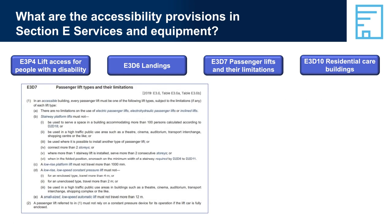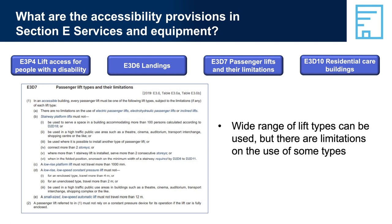E3D7, Passenger Lifts and Their Limitations: Part E3D7 identifies the range of lifts that can be used in buildings and their limitations. While the range is broad and allows for more cost-effective approaches, especially for small buildings, there are some limits on when each type of lift can be used. Some types of lift include an electric passenger lift, a stairway platform lift which follows the flight of stairs on rails fixed at one side, a low-rise platform lift, and an inclined lift.